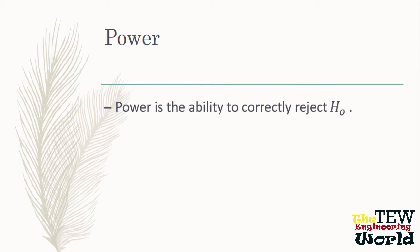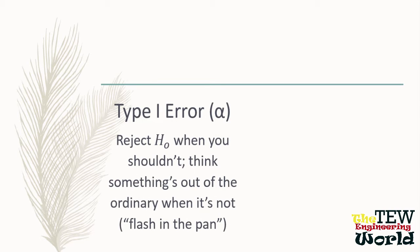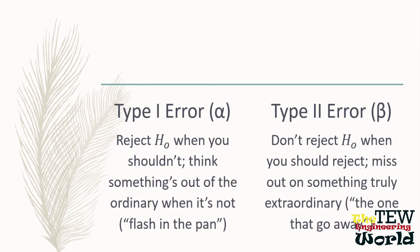Summing up the two types of errors: Type 1 error rejects the null hypothesis when you should not — you think something out of the ordinary when it is not. We call that a flash in the pan. Type 2 error is not rejecting a null hypothesis when you should reject it, and you miss out on something truly extraordinary. We might think of that as the one that got away.